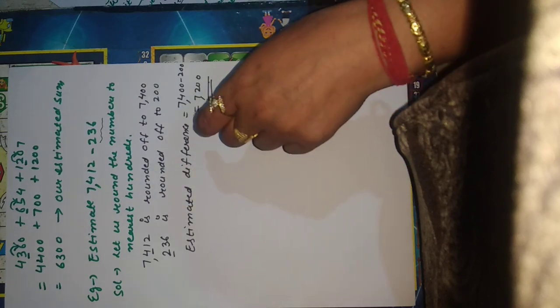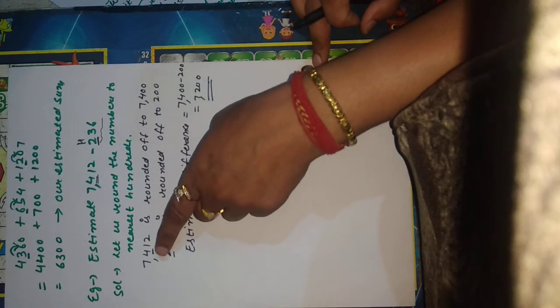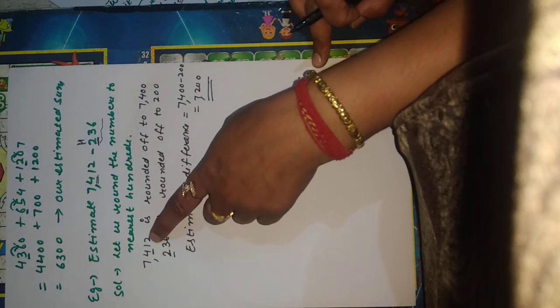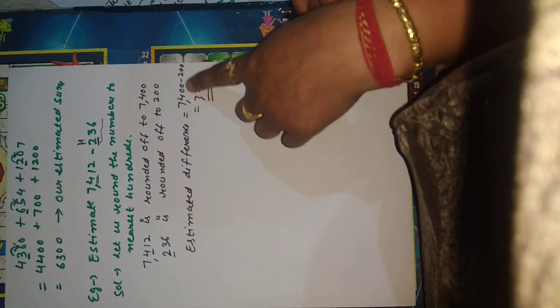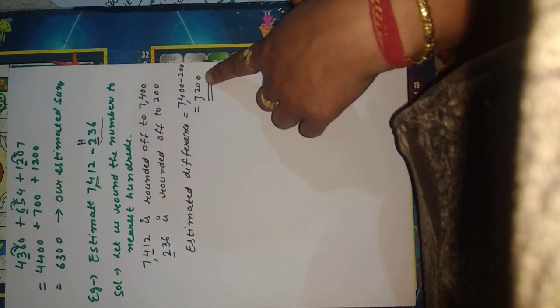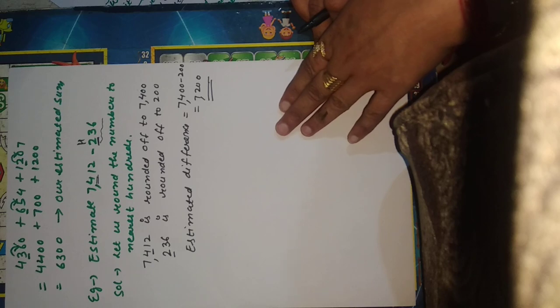Now estimate the difference. Apply the same rounding rule: if the following digit is less than 5, round down — for example, a number becomes 200. Take the difference of the rounded numbers, and the answer is 7200. Students, watch the video carefully and solve all the sums on the basis of this concept. Thank you.